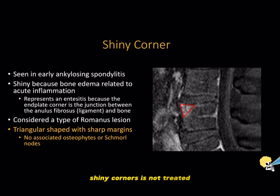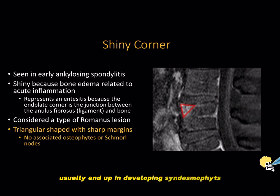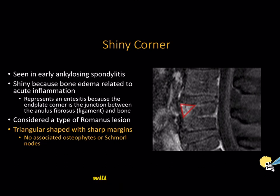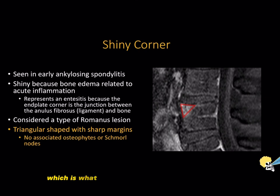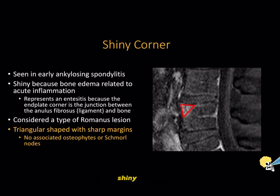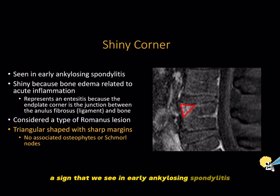Shiny corners, if not treated, usually end up developing syndesmophytes, and multiple syndesmophytes will cause a bamboo spine, which is what we see in late ankylosing spondylitis. Shiny corner — a sign that we see in early ankylosing spondylitis — now you know.